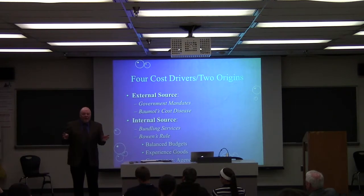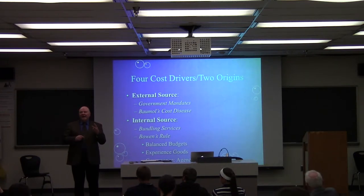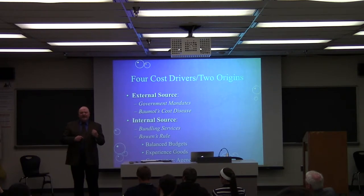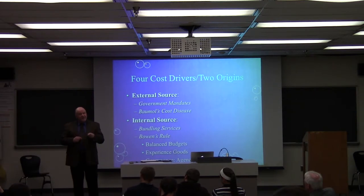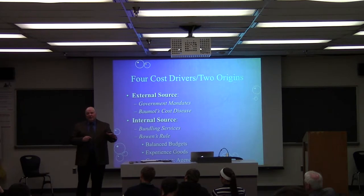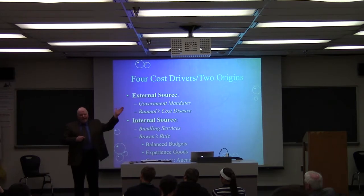There are two circumstances under which you can make an economic justification for bundling. The first is when there are production externalities in the goods being bundled — where bundling allows you to produce them at a lower cost than if sold separately. You can make that case for Microsoft, because the Justice Department had a very difficult time proving damage to customers given that the real price of the bundled software was going down.